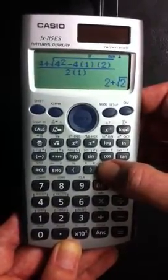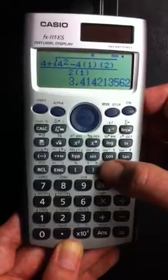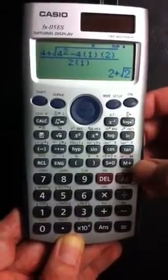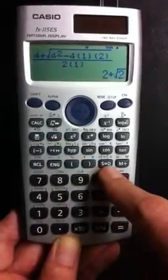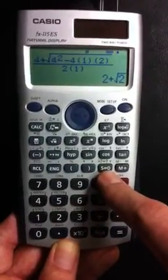So you get an exact answer, and you get an approximate answer. So that's one nice feature, you've got the fraction button, you've got the square root button, you've got the conversion to decimal button here.